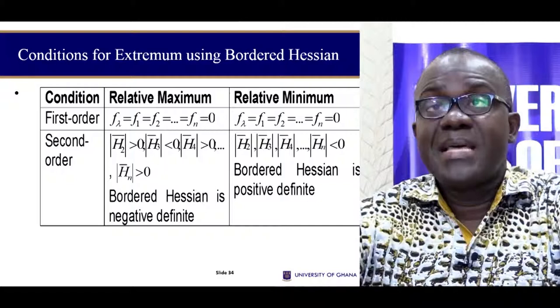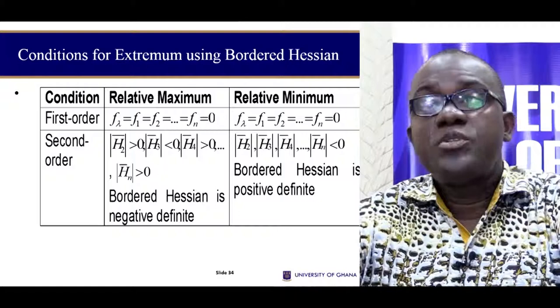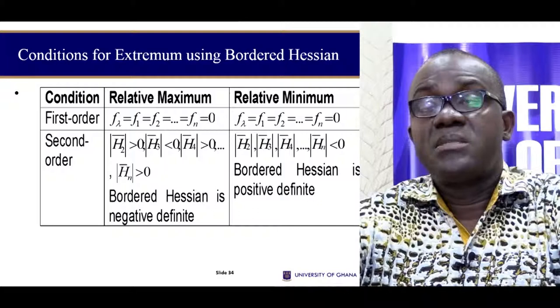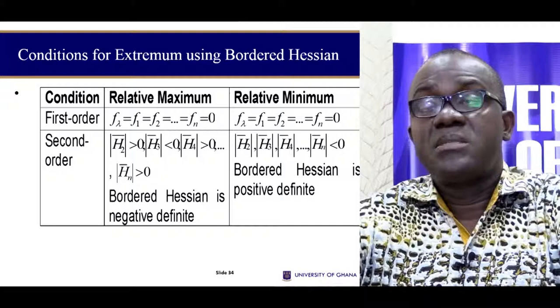The value addition is that the Bordered Hessian determinant permits you to determine the maximum or the minimum of a function with any number of variables — a more convenient way of doing that. These are the conditions for a maximum and the conditions for a minimum. Thank you very much. I have an example here — please try your hands on it and let's meet at the chat room and discuss how we were able to do this example.